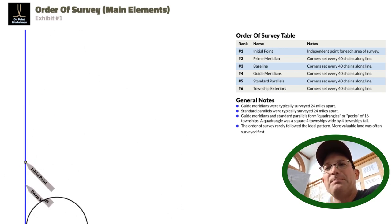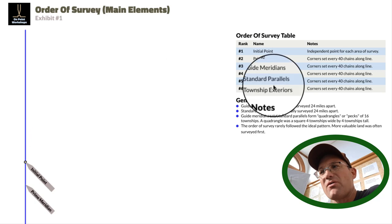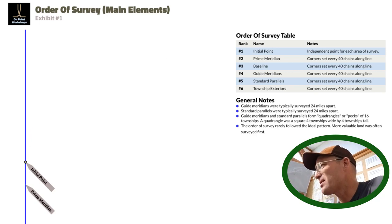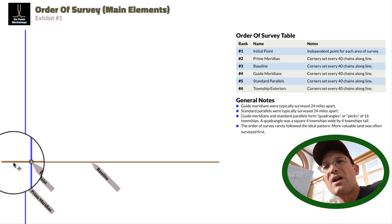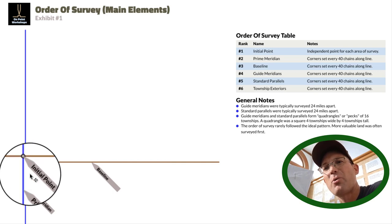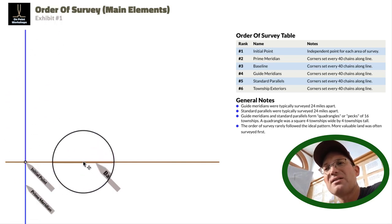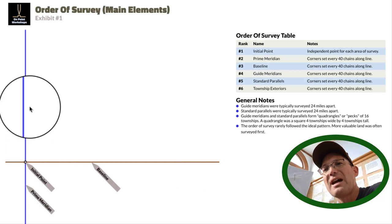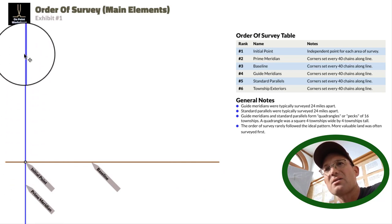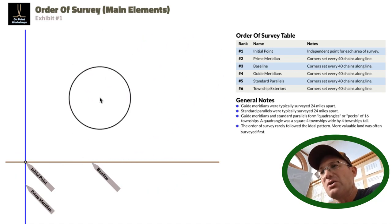At some point after the Prime Meridian starts getting surveyed, they come in and do what's called the baseline. The baseline runs east-west from the initial point. The Prime Meridian runs north-south. You can think of these as establishing the x-axis and the y-axis, or the northing axis and the easting axis of this grid, this mile-by-mile grid that they're going to use to divide the land up.